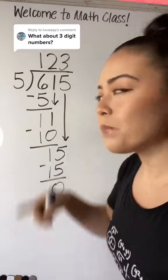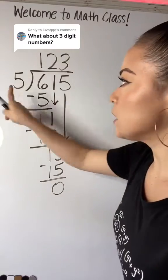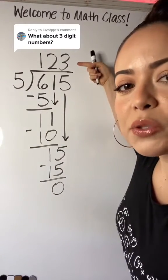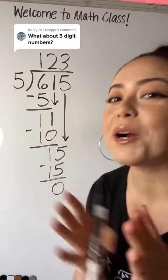And so 615 divided by five is 123. I hope that helps.